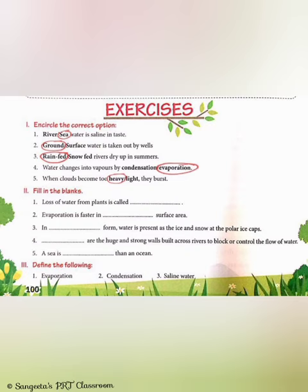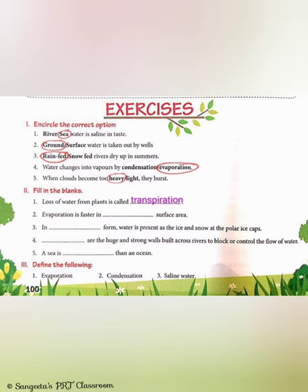Question 2: Fill in the blanks. Part 1 — Loss of water from plants is called blank. The answer is transpiration; loss of water from plants is called transpiration.